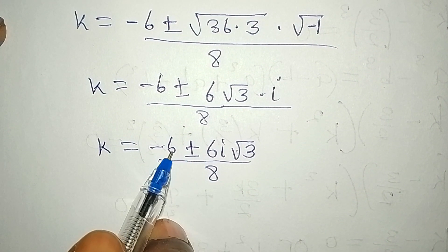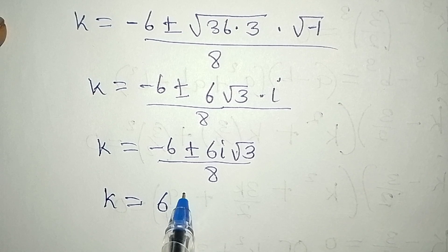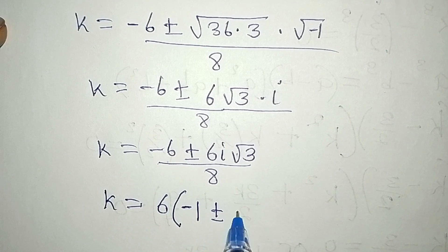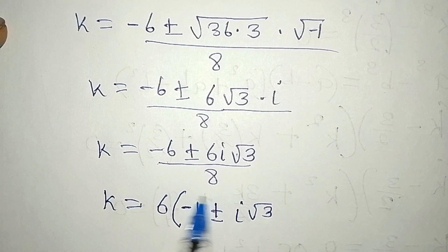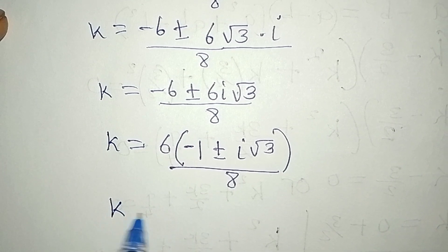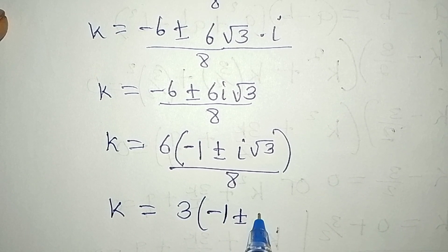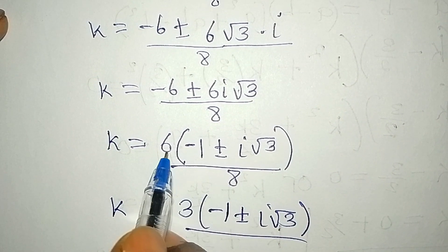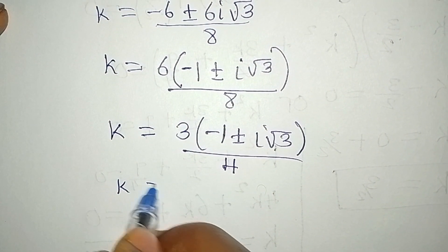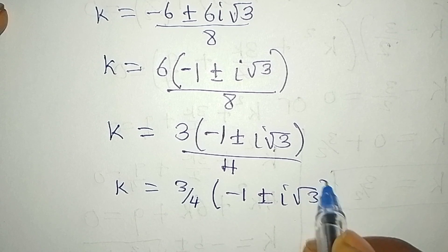Factoring out 6, which is common to both terms: k = 6(−1 ± i√3) / 8. Dividing numerator and denominator by 2 gives k = 3(−1 ± i√3) / 4, or k = (3/4)(−1 ± i√3). This is a two-in-one solution because of the plus-or-minus.